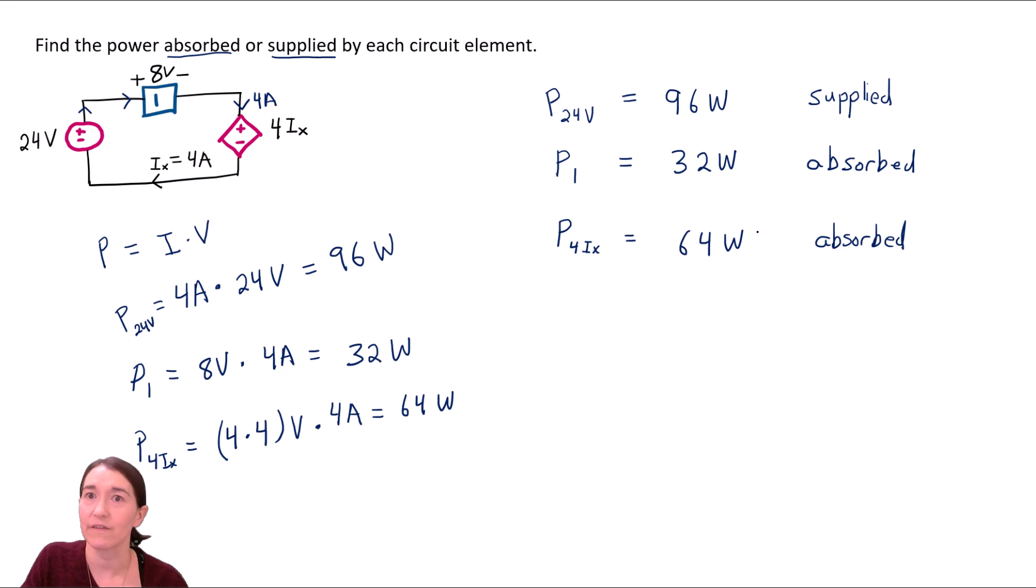Since you're doing so many individual calculations, the way to check if it is correct is to use Telehen's theorem. And that is to check all the absorbed. Make sure the absorbed power, the sum of all the absorbed is equal to all the sum of all the supplied. So if we look at our values here. We can see 96 is supplied. So these two better add up. And they do. So we can just write it out here. This is a check.